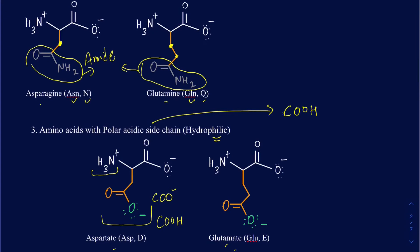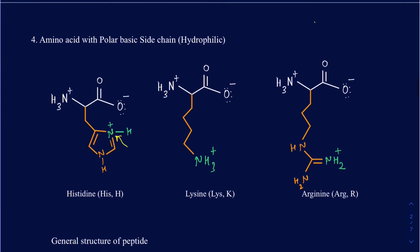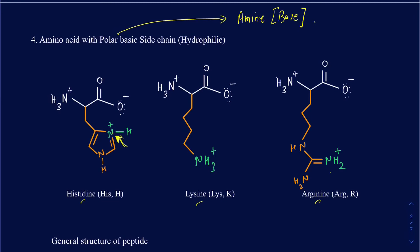You're also going to have polar basic amino acids. In polar basic amino acids, you're going to have an amine as your sidechain — that's what's going to be creating the base. Three common ones are going to be histidine, lysine, and arginine. In histidine, you have a nitrogen that's responsible for making it a basic sidechain. In lysine, you have an NH2 group. In arginine, you also have an NH2 that makes it a base.